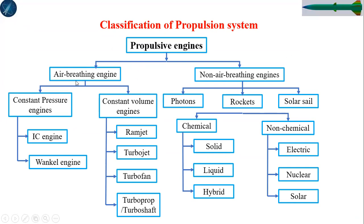Air-breathing types are further classified as constant pressure engines and constant volume engines — concepts from your thermodynamics course. In the case of constant pressure engines, we have IC engines and Wankel engines. For constant volume engines, we have ramjet, turbojet, turbofan, turboprop, and turboshaft, which are mostly used for aircraft operating within the atmosphere.